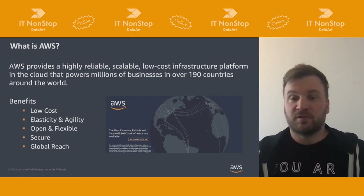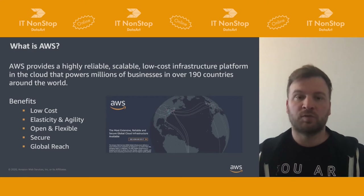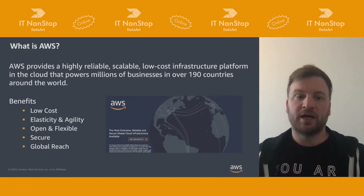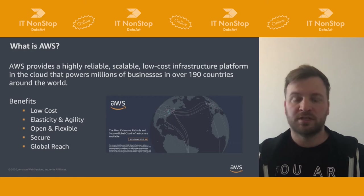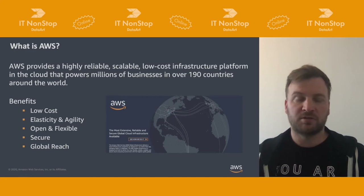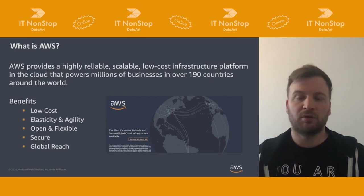The main benefits of AWS Cloud include the ability to consume resources on demand, giving you low cost of ownership, agility and elasticity of services, and openness and flexibility. Security is what we call AWS's job zero — we always start from security, it's built into all of our services. And global reach means we are available all around the world.